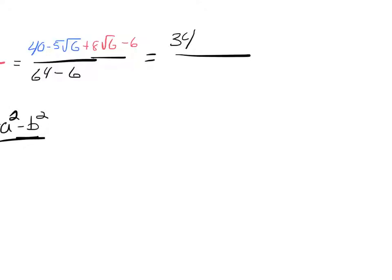And then negative 5 square root of 6 plus 8 square root of 6 is plus 3 square root of 6. And 64 minus 6 is 58.